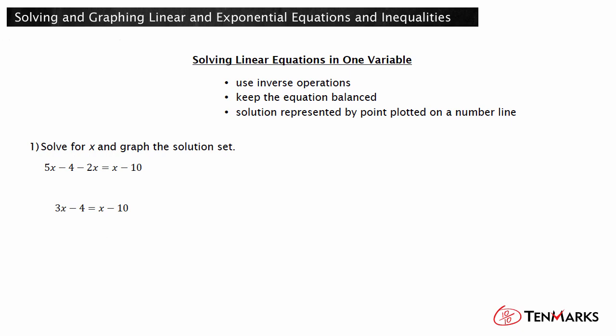Then, get both x terms on one side of the equation. You can do this by subtracting x from each side. Next, isolate 2x by adding 4 to both sides of the equation. Finally, divide both sides of the equation by 2. The solution to the equation is x equals negative 3. Represent the solution by plotting a point at negative 3 on a number line as shown. Negative 3 is the only solution to the equation.